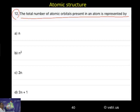Very simple. The correct answer is n squared. Total number of orbitals. What is k? k equal to 1.